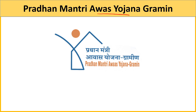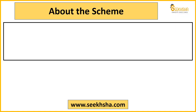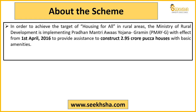There are so many important points inside this scheme, so listen and try to understand each point. First, to know the scheme - it is a Housing for All scheme for rural areas, aimed at providing homes to the homeless. It is implemented by the Ministry of Rural Development, which launched it in April 2016.